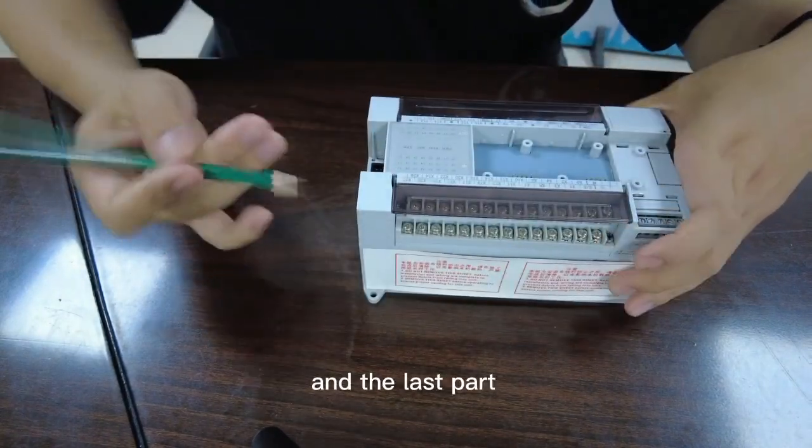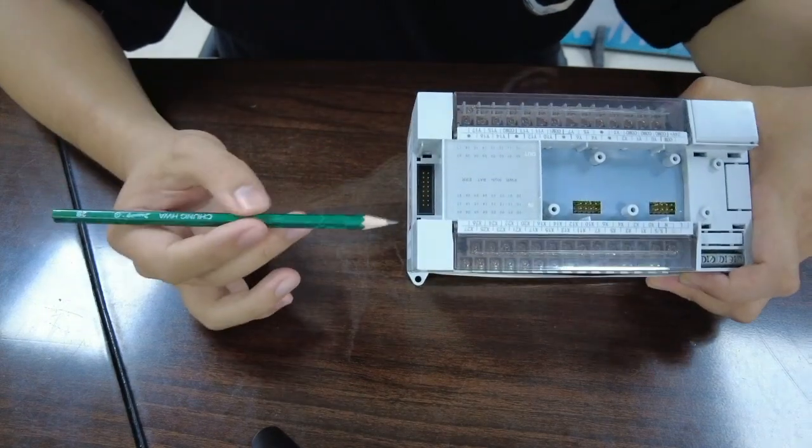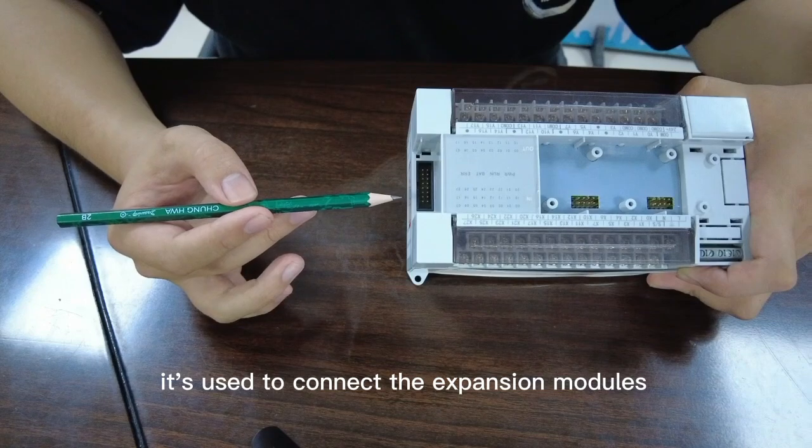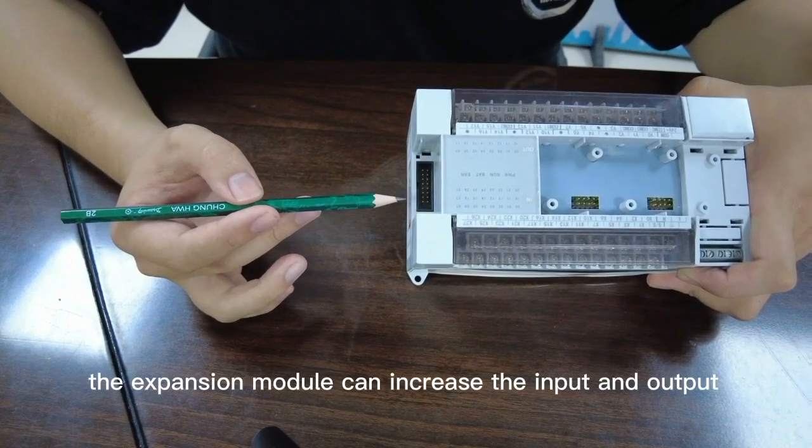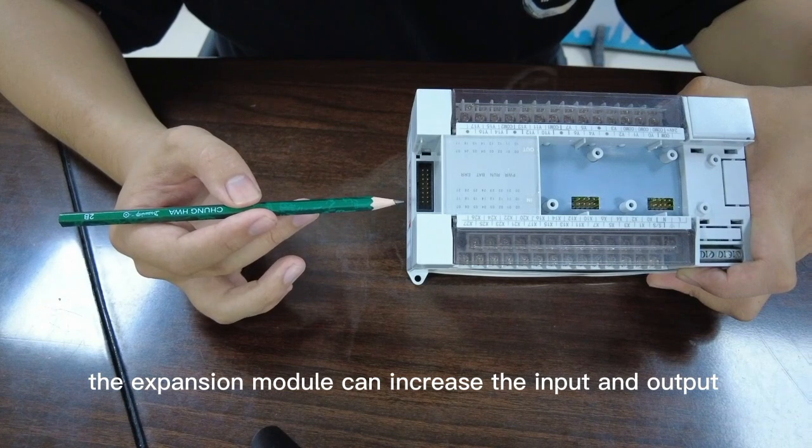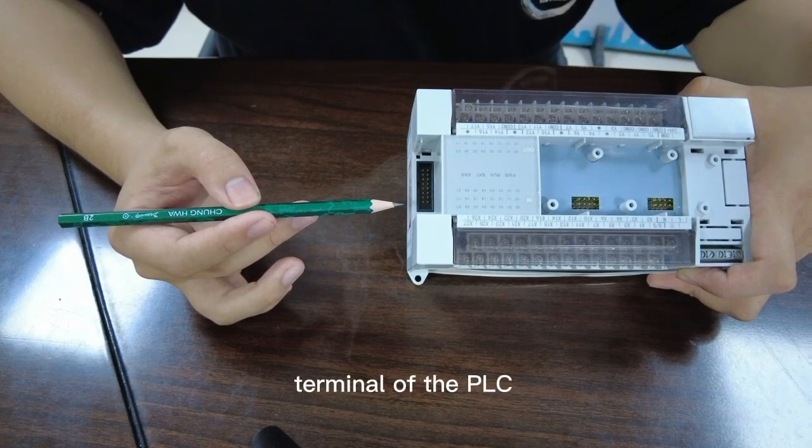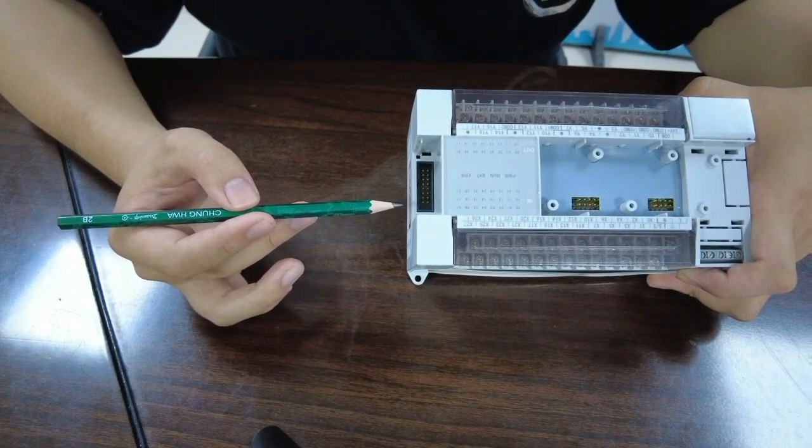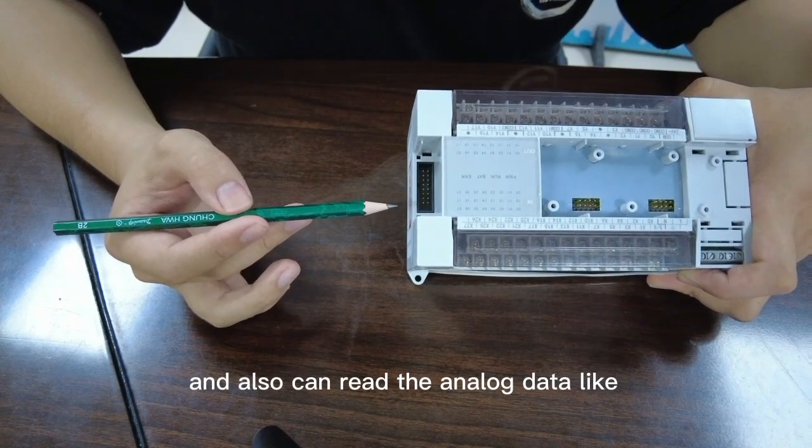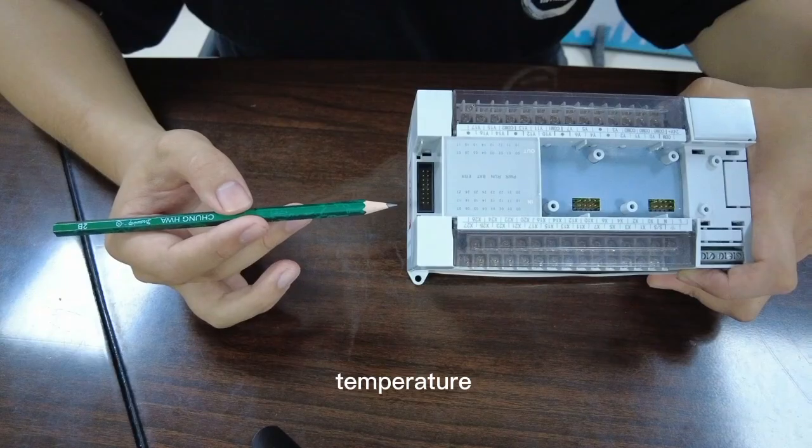And the last part is used to connect the expansion module. The expansion module can increase the input and output terminal of the PLC and also can read the analog data like temperature and wind.